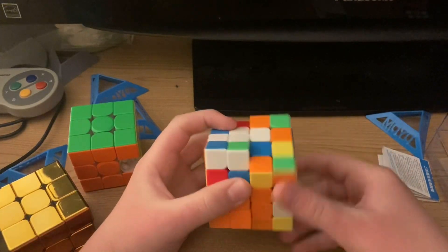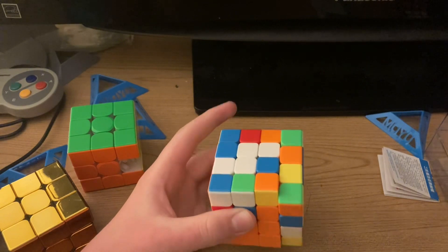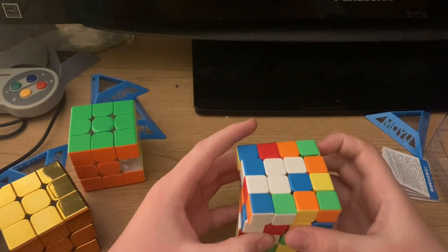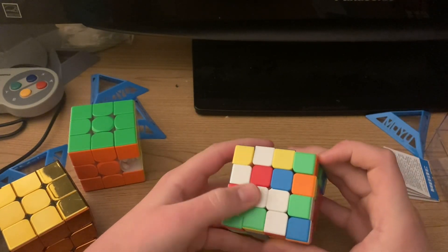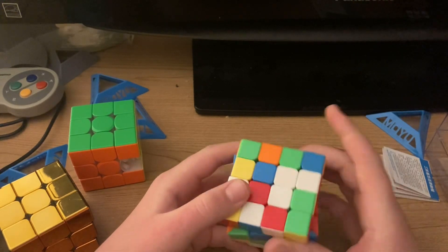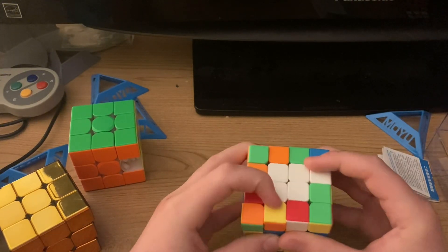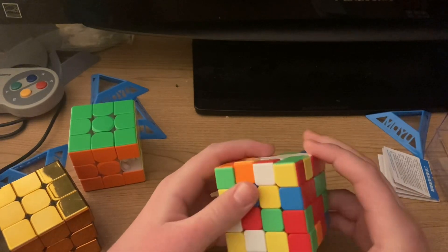You could just insert that like that, or you could do something like this. You could just hold it, make it form a bar, put it back and pull it up, which makes the white center.